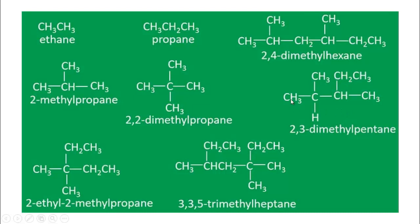Now follow this interesting example. The longest chain appears to be four carbons, but actually if we take it like this way, it becomes a chain of five carbons. So you have to consider this five-carbon chain as the longest chain, not the four-carbon chain. In that case, the methyl group becomes the substituted group. From this side, substitution occurs at the second carbon; from the other side, at the third carbon. So numbering starts from this side, giving 2,3-dimethylpentane.